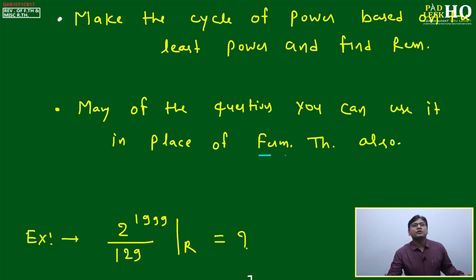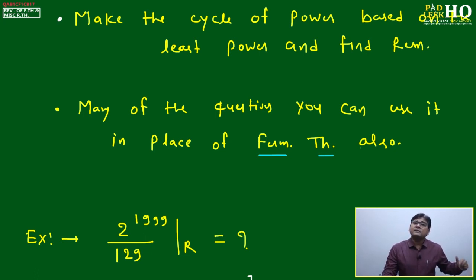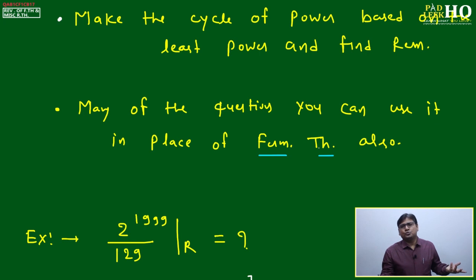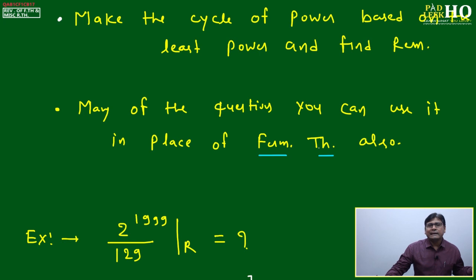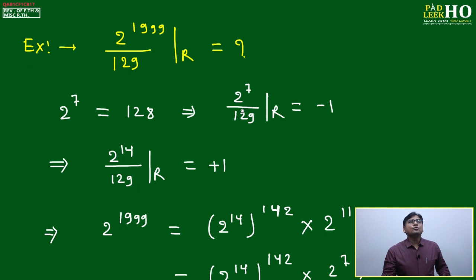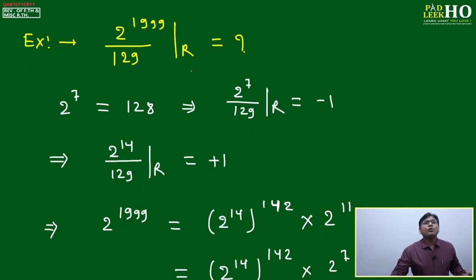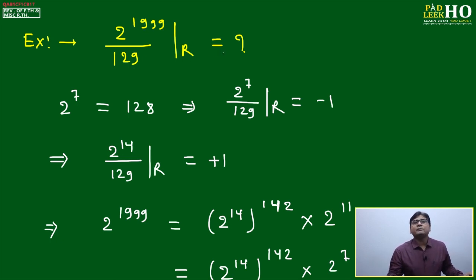Once you find the least power giving remainder +1, -1, or 0, make a cycle based on that least power and determine the remainder. This method can even replace Fermat's theorem in many questions. For miscellaneous questions where you can't identify any pattern, the pattern method will solve it.